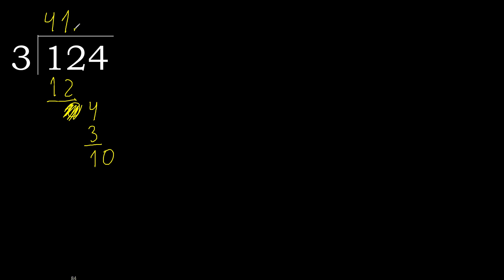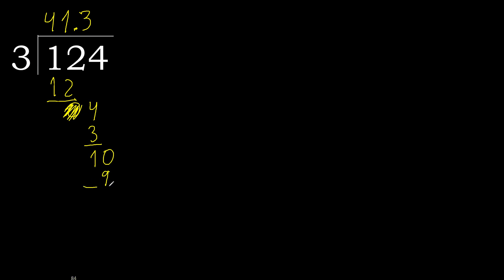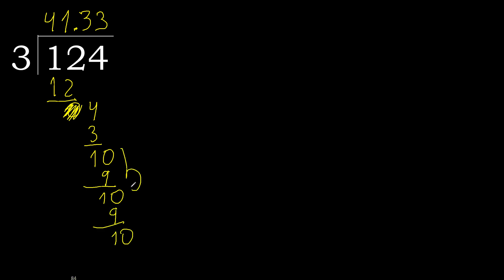Here, add a decimal point. Complete. Point. Bring down: 10. 3 multiplied by 4 is 12 — 12 is greater. Multiply by 3: 9. Subtract. Complete. Point. Bring down: 10. 3 multiplied by 3 is 9. Subtract. Complete — repeat, therefore repeat.